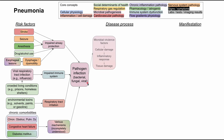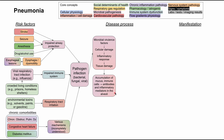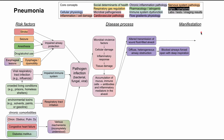Once you have that pathogen infection, there's a series of steps that lead to damage of cells and tissues. The microbes infecting you have virulence factors that cause direct cellular damage, which triggers an inflammatory response that can then cause tissue damage surrounding those cells. When you have an accumulation of mucus and immune cells, you get antibodies and inflammatory mediators in the alveoli, which can cause a series of downstream issues that lead to pneumonia manifestations.